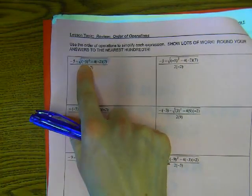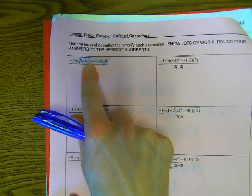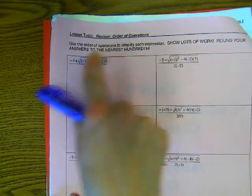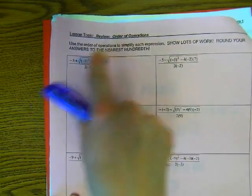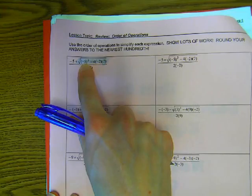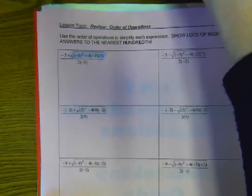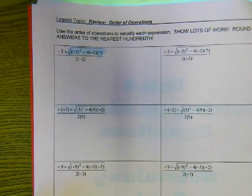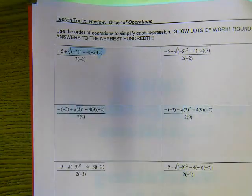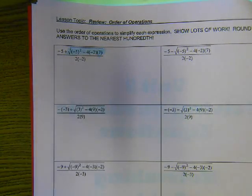And you may use a calculator. Would you simplify the thing underneath the square root? Now be careful, because negative 5 squared is not negative 25. What is that? There's a packet right on the front table. It's 25, correct?